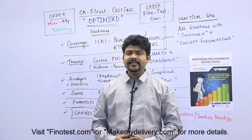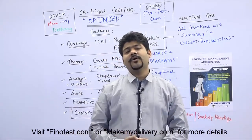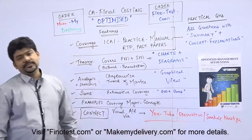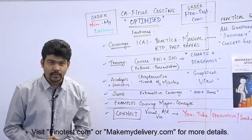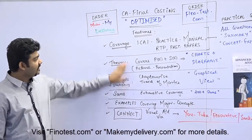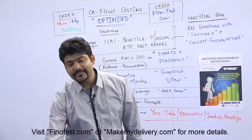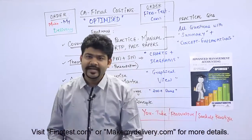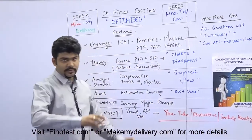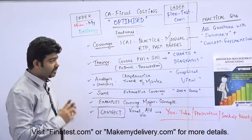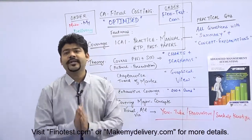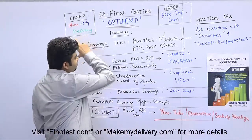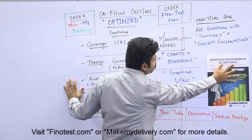This book is mainly on C.A. Final Advanced Management Accounting Cost Management and does not include OR. Now, what is the value addition you are going to get from this book? Students ask: how much coverage will there be? Will the practice manual be complete? Will RTP be covered? Will MTP be covered? Will past papers be covered? Absolutely yes. The whole book has been framed keeping in mind student connect — wherever students face the most problems, I have covered all of that through this book.